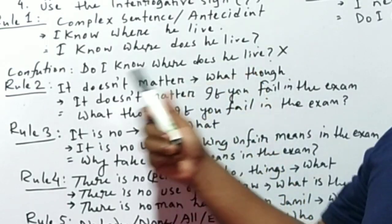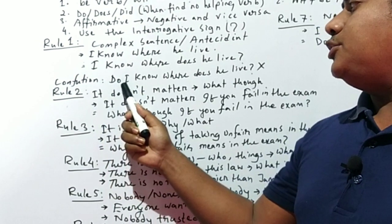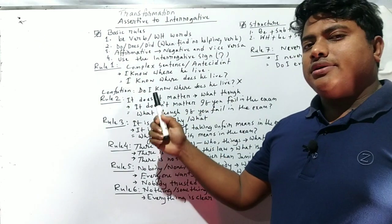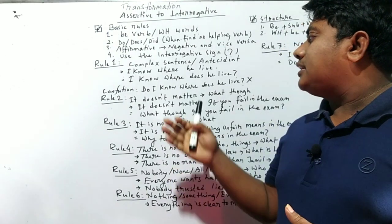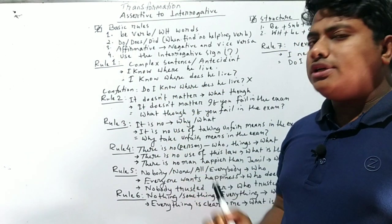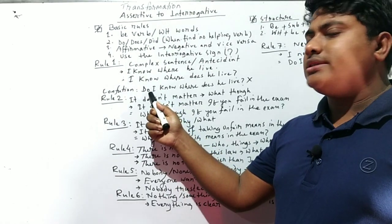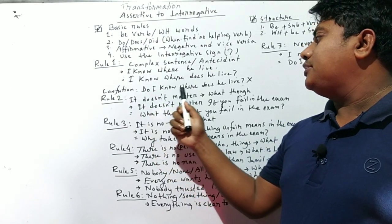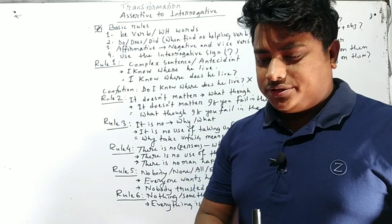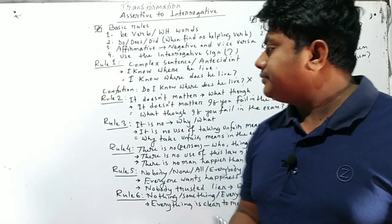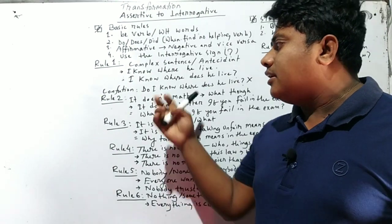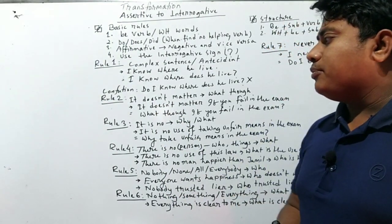Now the question is: should the full interrogative sentence become 'Do I know where does he live?' The answer is no — we never convert in a double way. So that last form is an incorrect sentence.